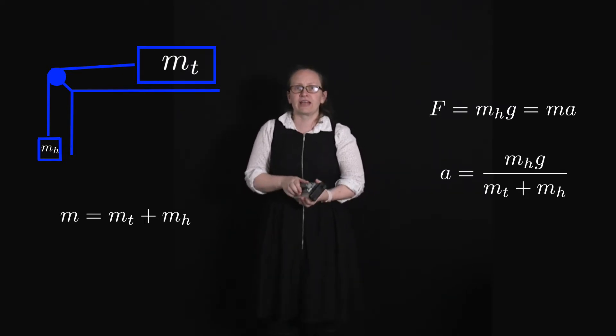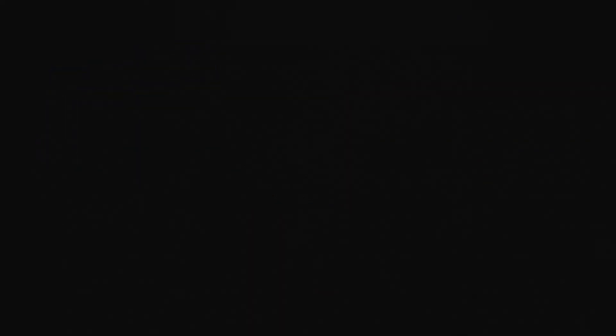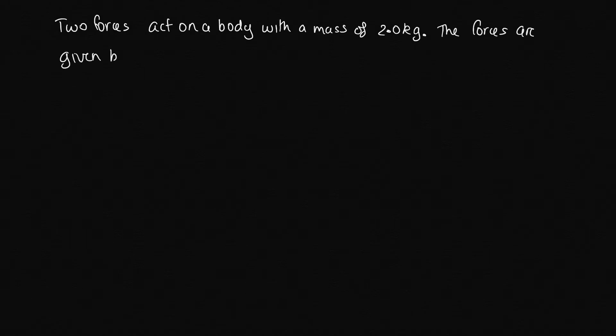Let's have a look at an example now where we'll use Newton's second law to solve a quantitative problem. Question is, two forces act on a body with a mass of 2.0 kilograms. The forces are given by F1 equals 3.0i newtons, and F2 equals minus 2.0i plus 2.0j newtons. What is the magnitude of the acceleration of the body?